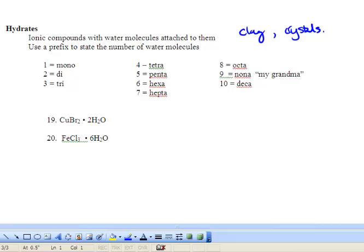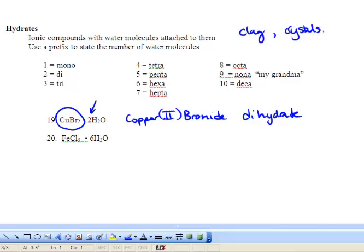We use the same prefix system as we do with covalent compounds. What we do is we name the ionic compound just how it normally would be named. And then we add a little bit with the water molecules there. We've got copper. And then we look at the number of waters that we have. And then we're going to name it dihydrate. So we've got a regular ionic compound. And then because we've got water attached to it, or it's inside the solid structure, or trapped in there, we call it dihydrate. And the di means two.